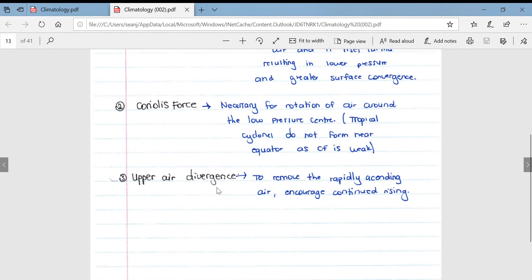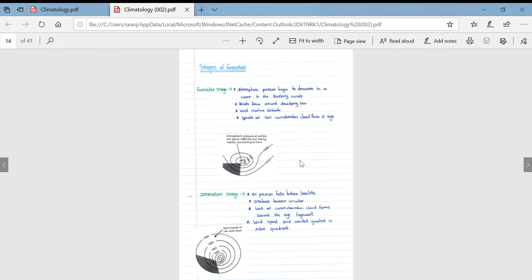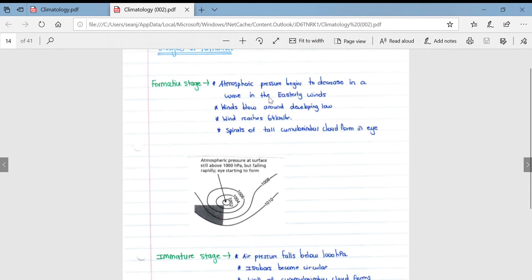Then upper air divergence. We need this to remove the rapidly ascending air from the surface of the earth and to encourage continued rising of air.